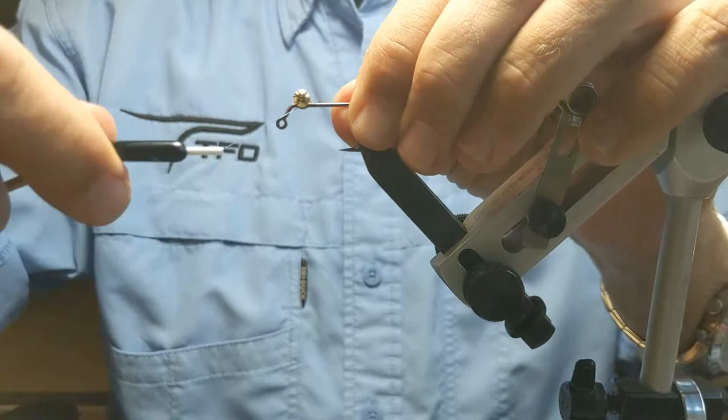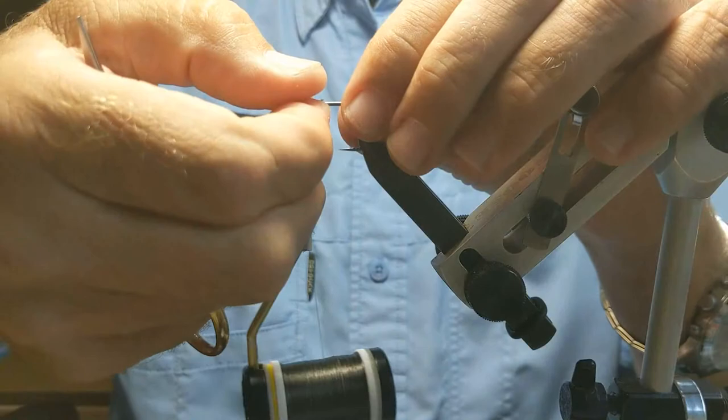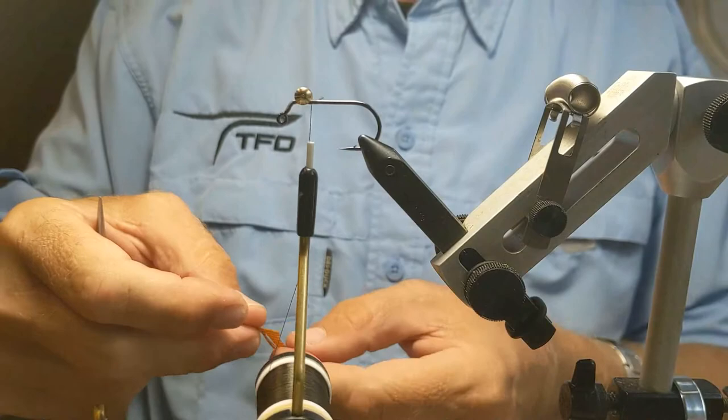Get them cinched down. Everybody's got their own way to do this. I usually do six cross wraps with more wraps tightening it down, and I can hardly move that.